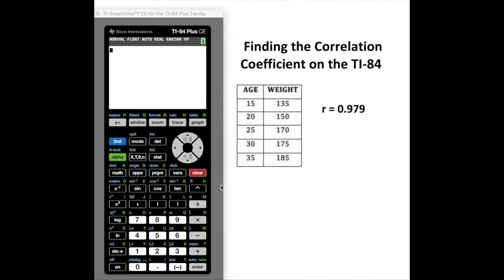I'm going to show you how to find the correlation coefficient on the TI-84. We've got some data here - a column for age and a column for weight.